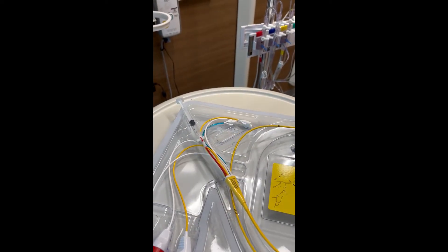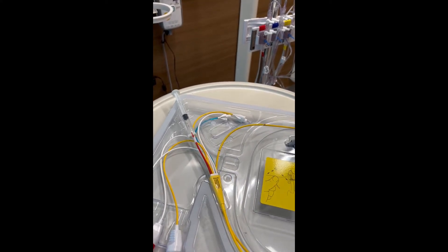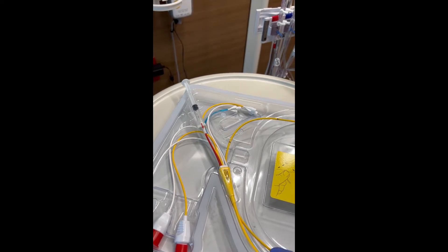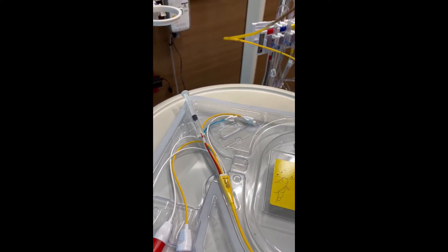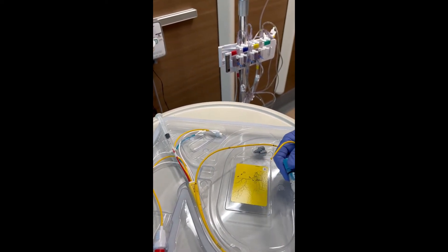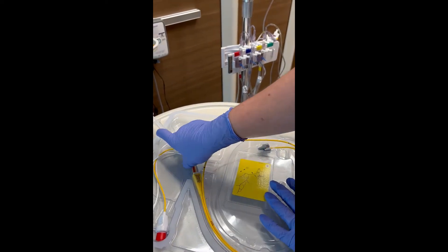So when the physician is ready to insert the Swan, if you're using a C-arm, fluoroscopy will be here with it. But he'll be sterile and he's going to hand you the Swan with the sleeve already on it. He'll be handing you these ends.